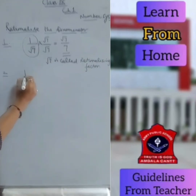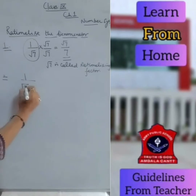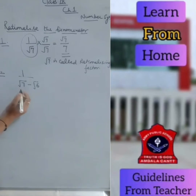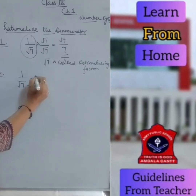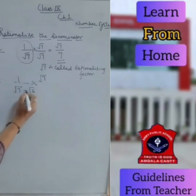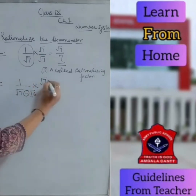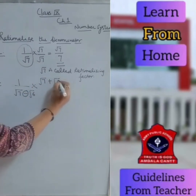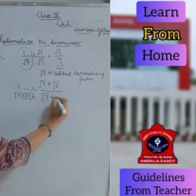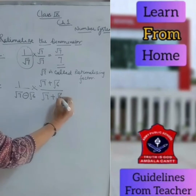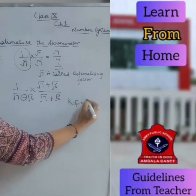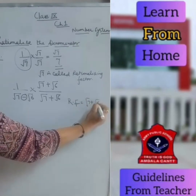Now see the second type: if you have 1 upon root 7 minus root 6, in the denominator you have root 7 minus root 6. What will be the rationalizing factor? Here, the terms will be the same but you will take the opposite sign. So multiply and divide by root 7 plus root 6. The rationalizing factor is root 7 plus root 6.